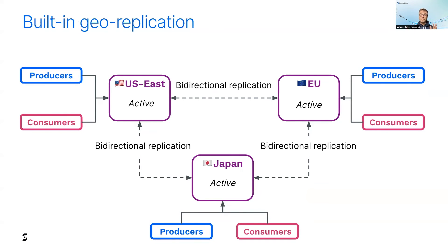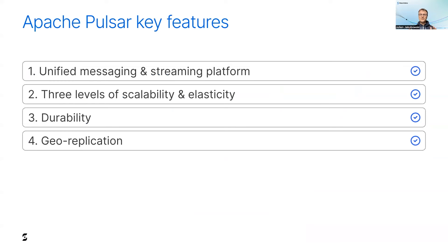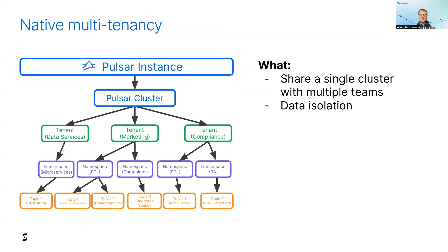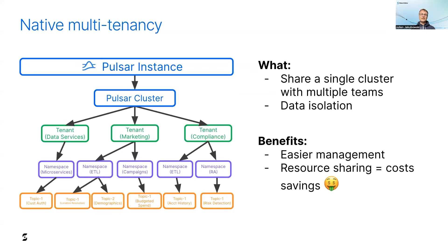To effectively manage the loss of an entire data center or region, you need a robust disaster recovery plan, and this is where geo-replication comes into play. Geo-replication provides disaster recovery — you have several clusters deployed in different regions or data centers, and if you lose a region, you can recover from it. Pulsar can replicate data to different regions automatically in a bi-directional way. Another very cool feature is multi-tenancy, which allows different departments or teams within an organization to share a Pulsar cluster while keeping their data isolated. The benefits include easier management, and sharing resources can lead to a significant reduction in the number of nodes in your infrastructure, saving on cost. This is a built-in feature.